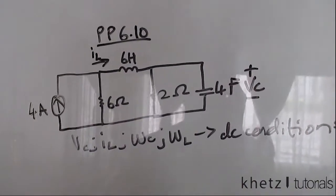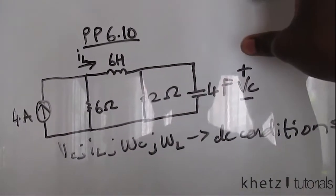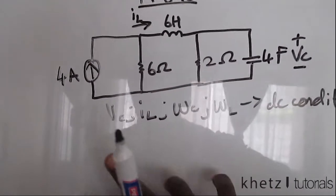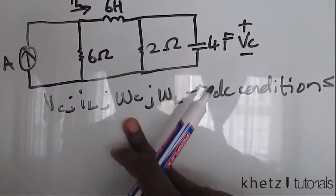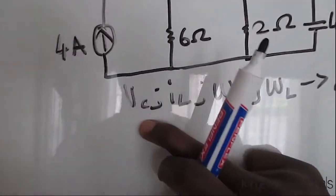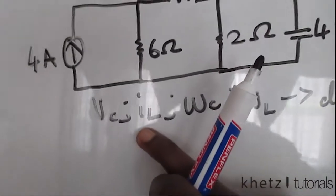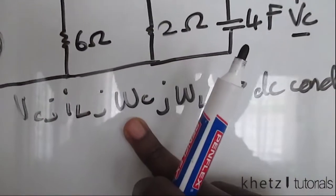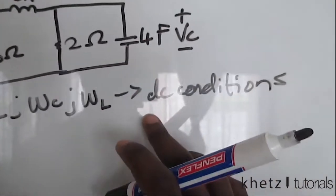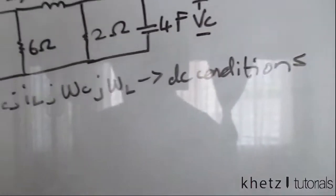Welcome to Khetz Tutorials. In this video, I'll be covering practice problem 6.8. We're given this circuit and we're asked to find VC, IL, WC, and WL, which stand for the voltage across the capacitor, the current across the inductor, the energy of the capacitor, as well as the energy of the inductor under DC conditions.